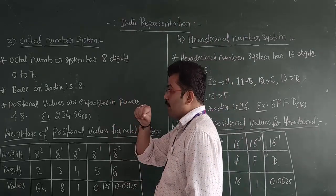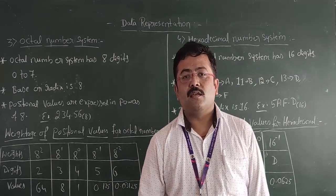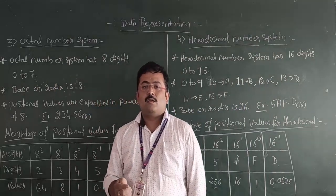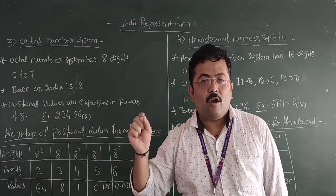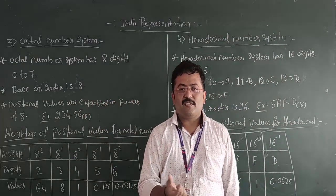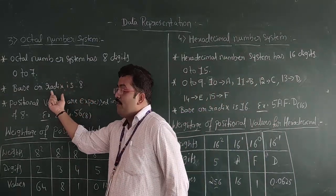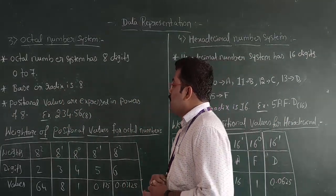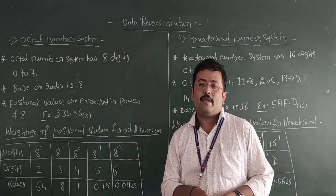So in this class, the octal number system contains 8 digits from 0 to 7, and the base or radix of an octal number system is 8, because the number system is octal — octal is nothing but 8. So the base value of the octal number system is 8, and positional values are expressed in powers of 8.